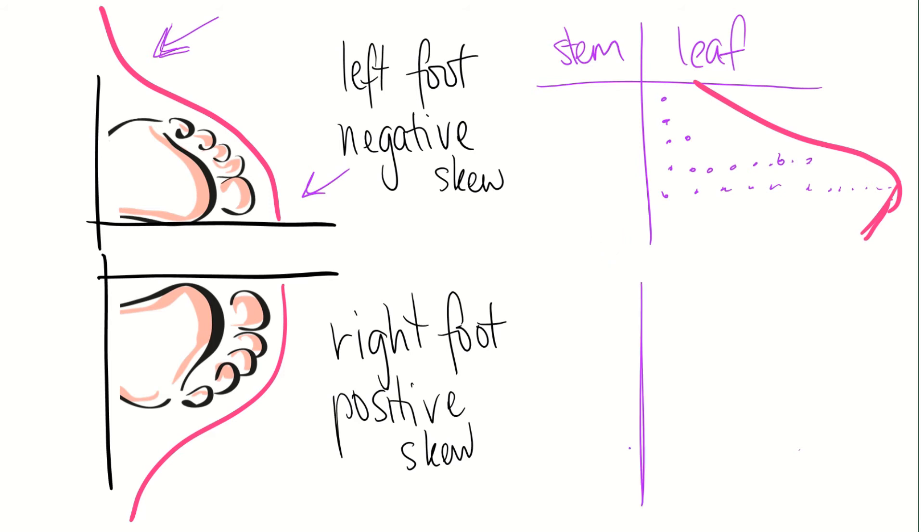So, that's how you can tell if your stem and leaf plot is a negative or positive skew. I'll do another example here for the positive skew. You see here that there's a lot of data. It's very high. So, I'm going to recreate that very high at the top. And slowly, your data decreases.